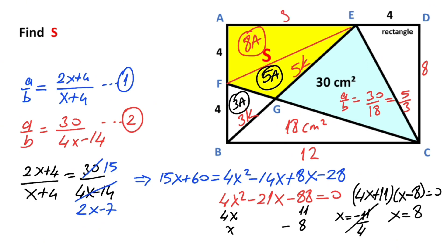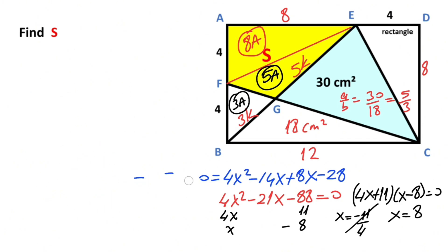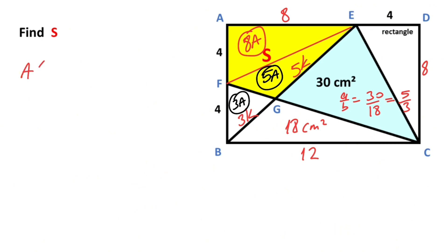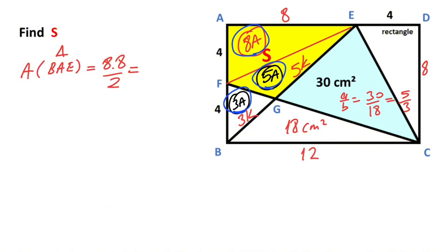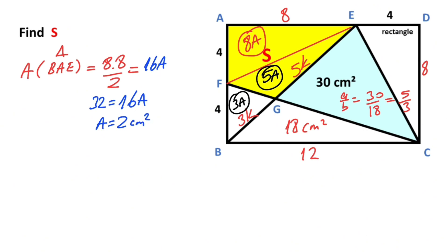We know that x equals 8. The area of triangle BAE equals 8 times 8 over 2. At the same time, this triangle area is also equal to 3 plus 5 plus 8, so 16 times capital A. Therefore 32 equals 16 times capital A, so capital A equals 2 centimeters squared.